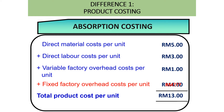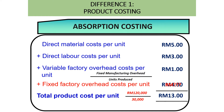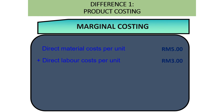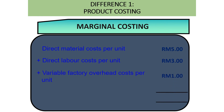The fixed factory overhead cost per unit is calculated as fixed manufacturing overhead divided by units produced — RM120,000 divided by 30,000 units, giving RM4 per unit. Under marginal costing, you only calculate direct material RM5, direct labor RM3, and variable factory overhead RM1, giving a total product cost per unit of RM9.